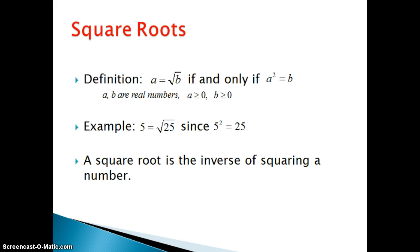The definition of a square root is a is equal to the square root of b if and only if a squared is equal to b. And this is for a and b in the real numbers and a and b are both greater than or equal to zero.